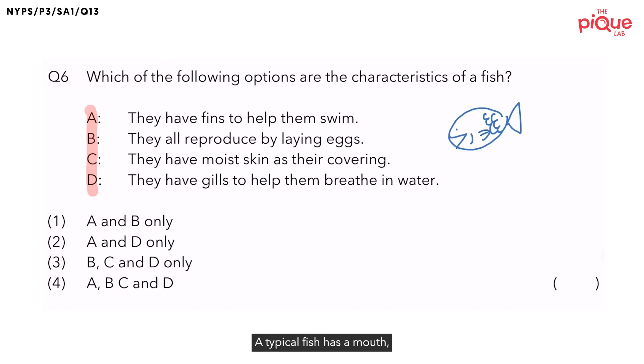A typical fish have a mouth, gills, fin, scales, and last but not least, a tail.